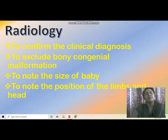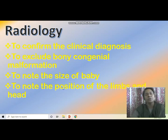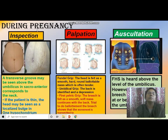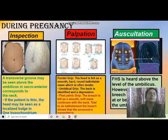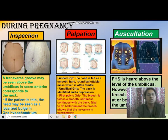Radiology is used to confirm the clinical diagnosis, exclude bony congenital malformations, know the size of the baby, and know the position of the limbs and head. On inspection during pregnancy, a transverse groove may be seen above the umbilicus corresponding to the neck in sacro-anterior position. If the patient is thin, the head may be seen as a localized bulge in one hypochondrium.